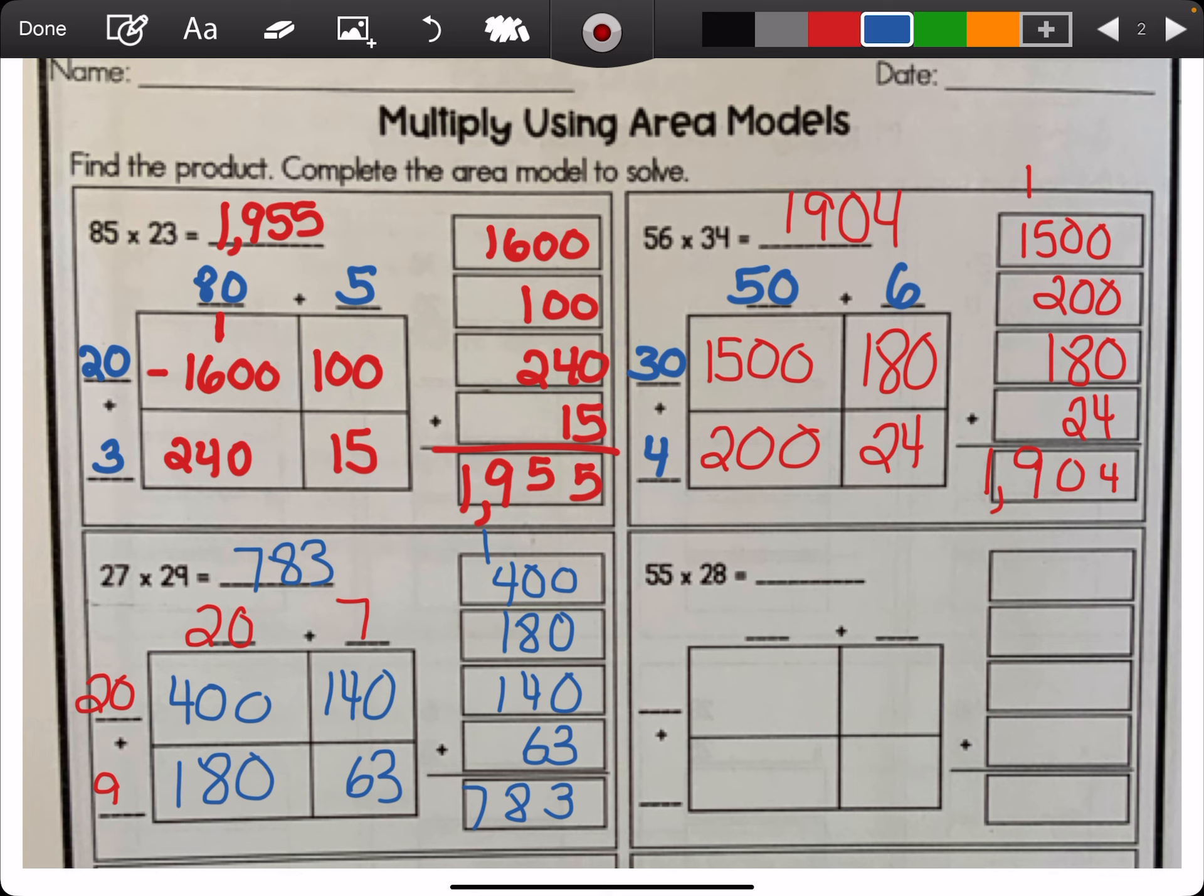And now, 55 times 28. Well, that's 50 plus 5 and 20 plus 8. 50 times 20. Well, I know 5 times 2 is 10. But, there's two 0s. That's 1,000. 50 times 8. Well, 5 times 8 is 40. Add 1, 0. That's 400. 5 times 20 is 5 times 2 is 10. But now, there's 1, 0. So, that's 100. And then, 5 times 8 is 40. Now, you see here, this is easy for me to add in my head. 1,400 is 1,400. Another 100 is 1,500. 1,540.